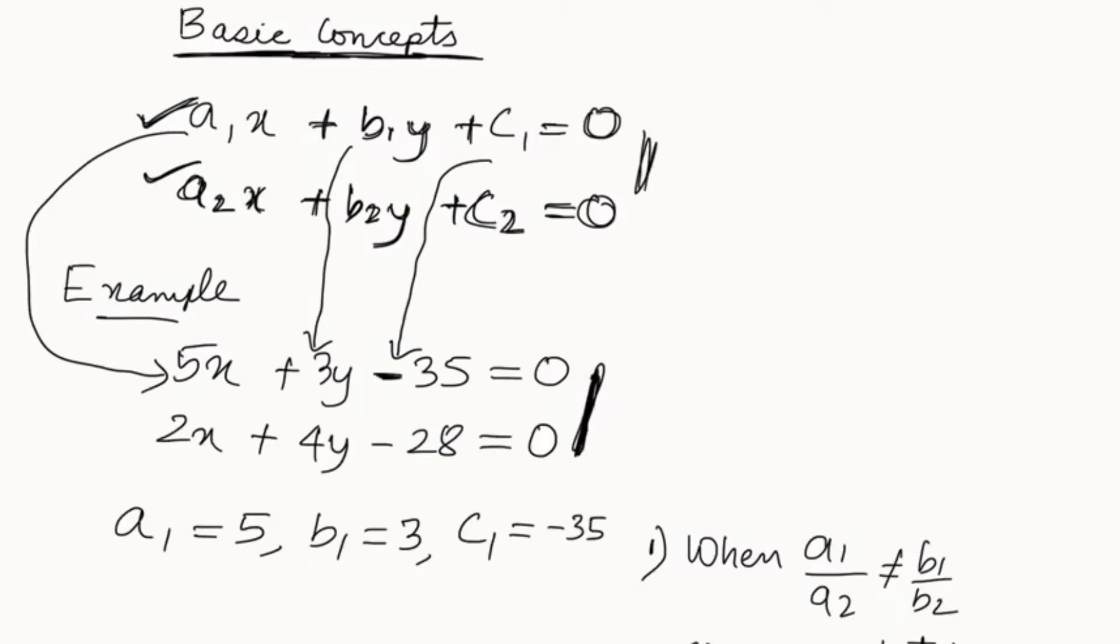Similarly, what about a2? a2 will be 2. b2 will be 4, exactly. And c2, again it will be minus 28. So this is how we figure out what is a1, b1, c1, a2, b2, and c2.